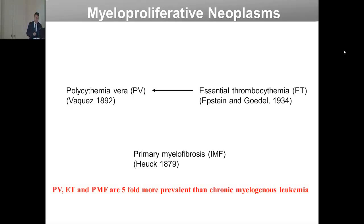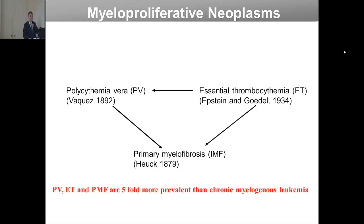Some patients start as essential thrombocythemia and evolve to polycythemia vera, and finally myelofibrosis — in that case, a secondary myelofibrosis. Some go directly from PV to myelofibrosis. Some are de novo PV or myelofibrosis. These diseases together are five times more prevalent than chronic myelogenous leukemia, which is driven by BCR-ABL and is also a member of these myeloid cancers.